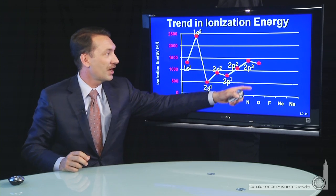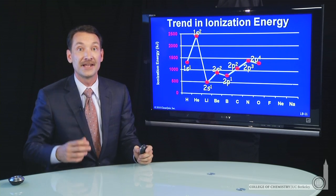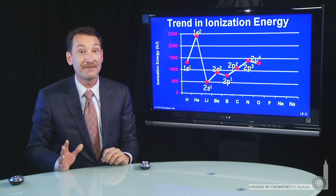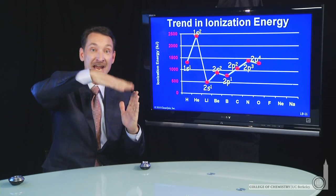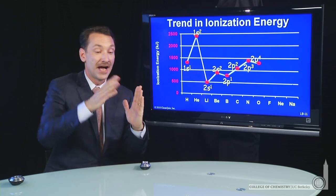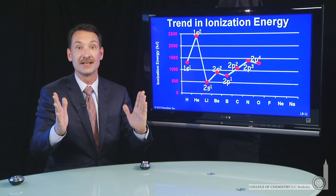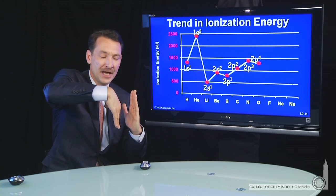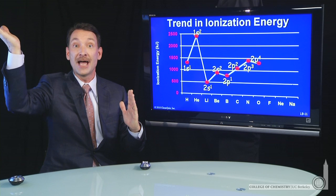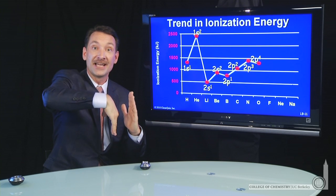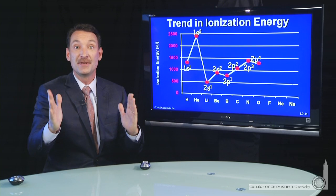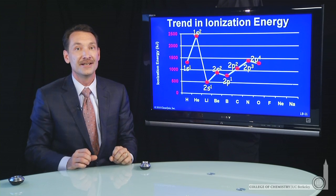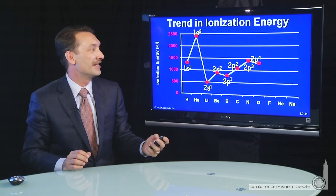As you continue across, there's a slight dip at oxygen. We can understand that in terms of the fact that nitrogen is in that half-filled state. Oxygen has a paired electron — when you go to oxygen, you add a paired electron, and there's a little bit of repulsion energy from pairing. Pull that electron away and oxygen is happy to go to that state where there are three unpaired electrons that are all parallel. So oxygen is slightly easier to ionize than its counterparts.